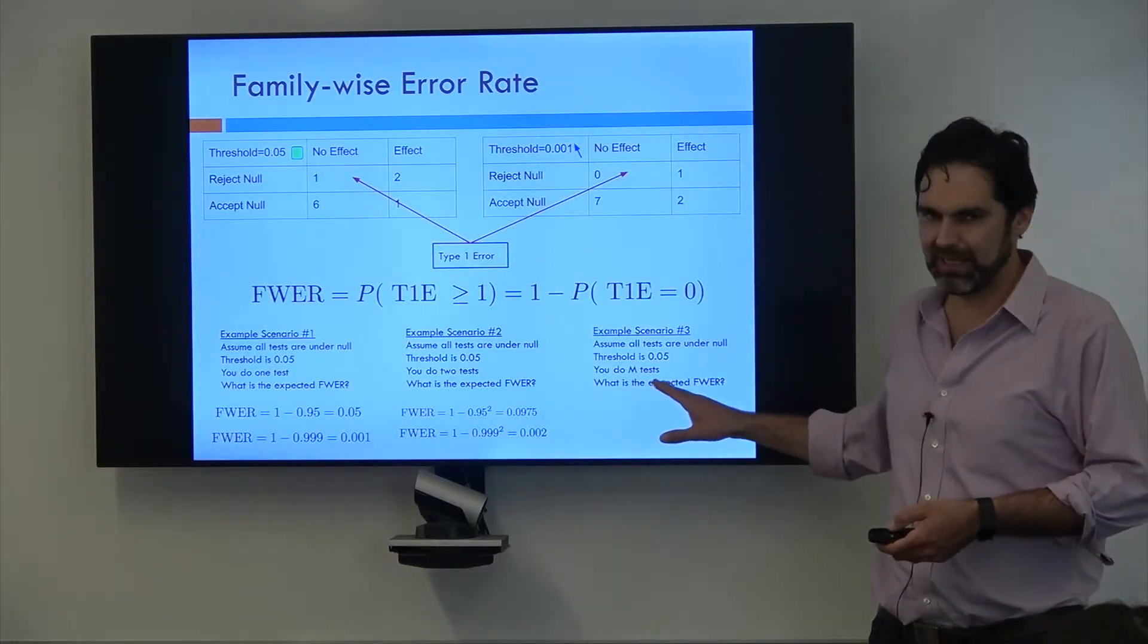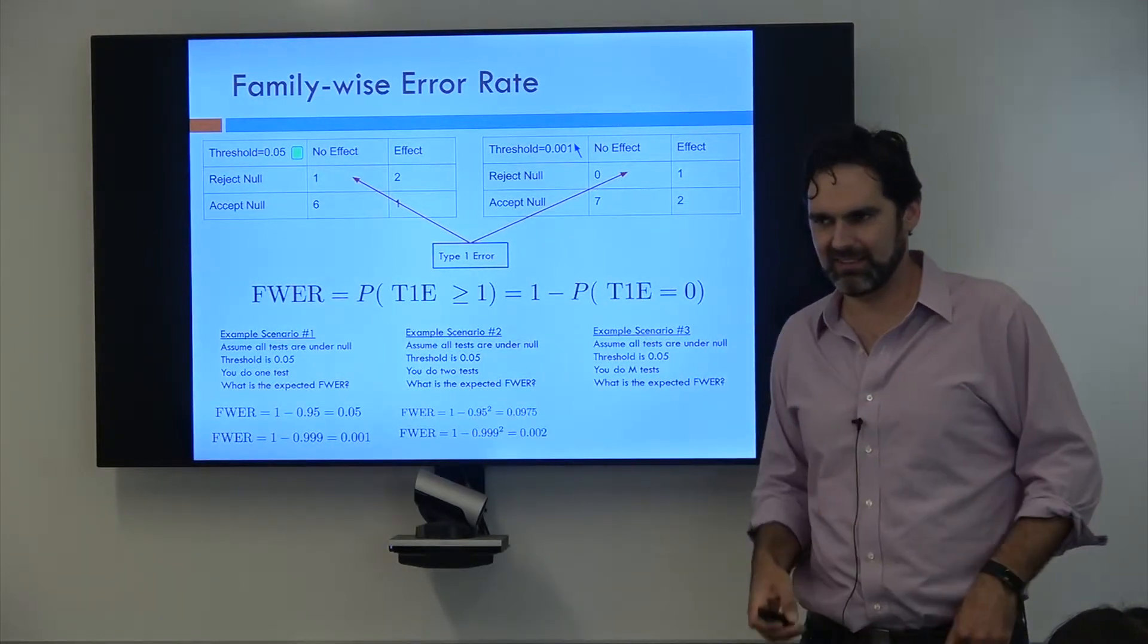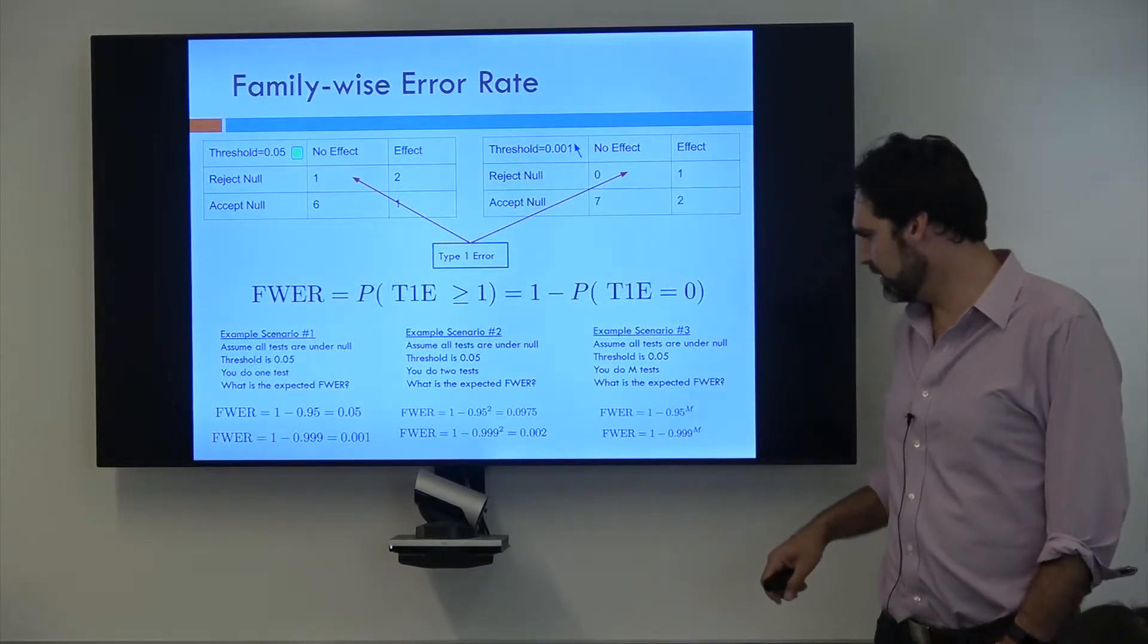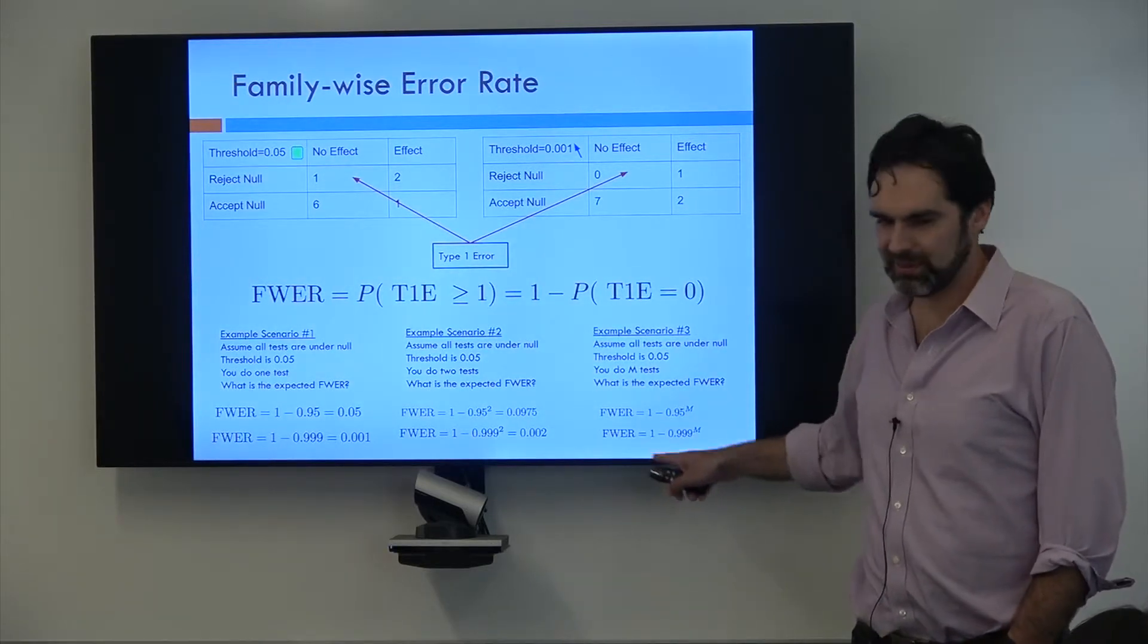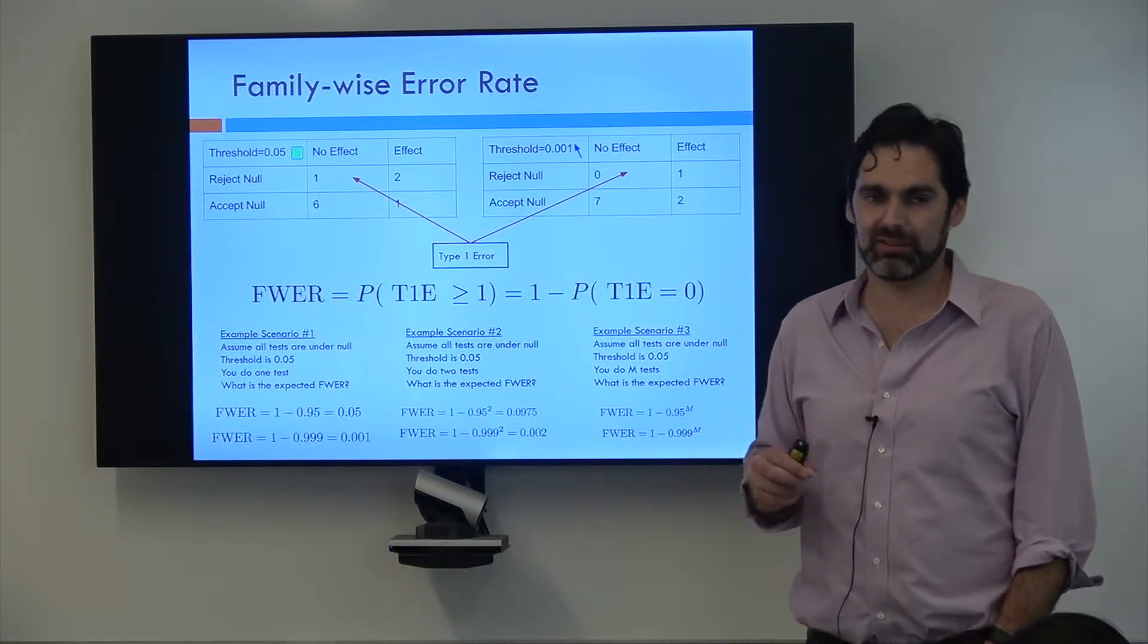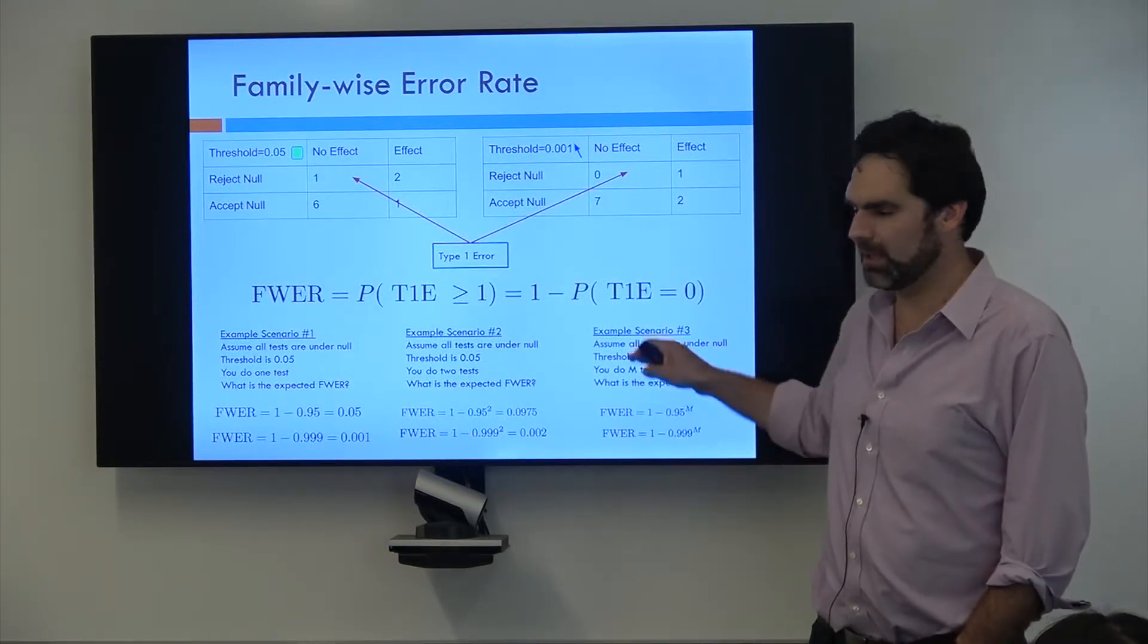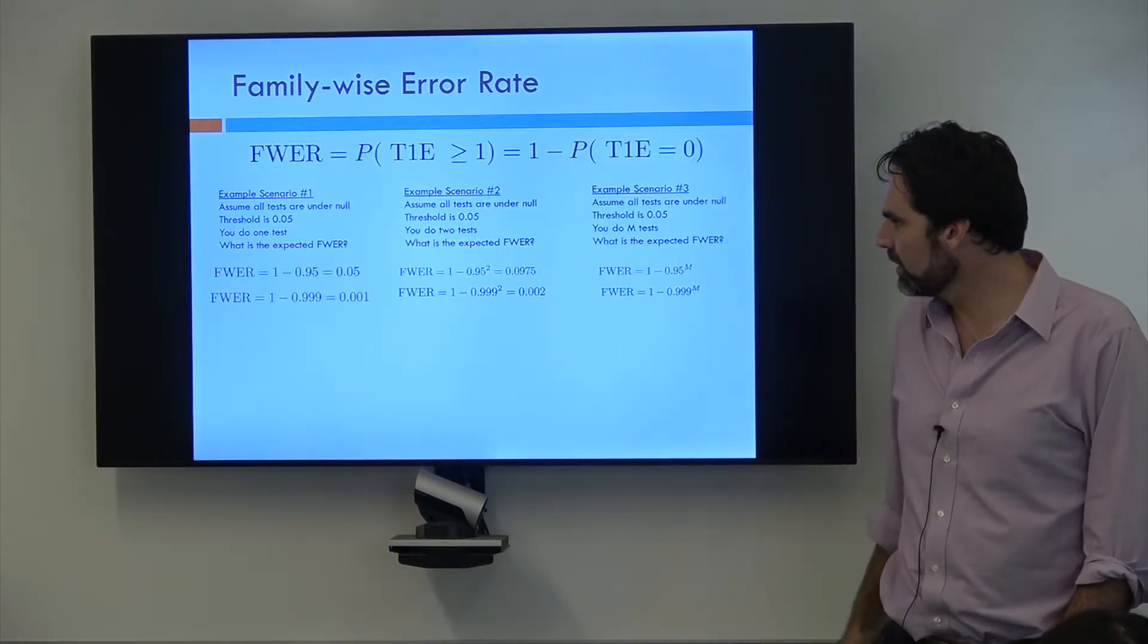Third example. Now we do M tests. So who can tell me what the equation looks like for family-wise error rate if you do M tests? Exactly. It's 0.95 to the M, and for the bottom one it's 0.999 to the M. And so this equation will tell us what our family-wise error rate is for any test we do. And the cool part is we can actually do this before we do the study. So before you do any study, you can figure out what you want your significant thresholds to be so that you can make sure that you don't have a lot of false positives when you actually do the study.